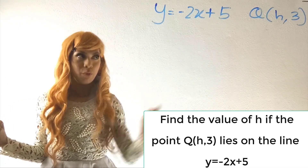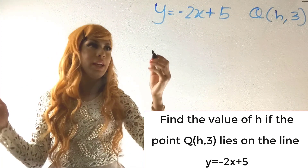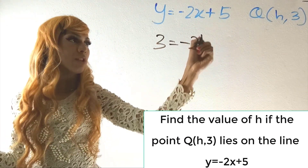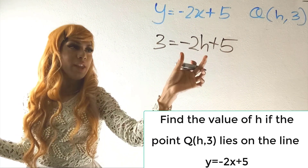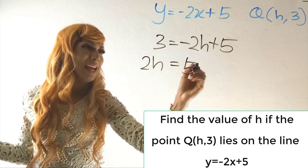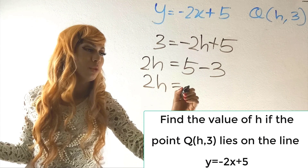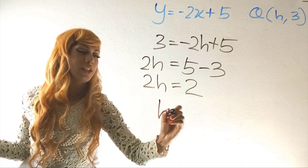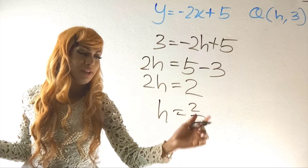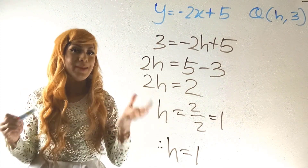Section eight: finding a missing value. Given that point (h, 3) lies on the equation x + 2y = 5, substitute x = h and y = 3: h + 2(3) = 5 → h + 6 = 5... substituting correctly: 3 = −2h + 5 → 2h = 5 − 3 = 2 → h = 1. Therefore h = 1.